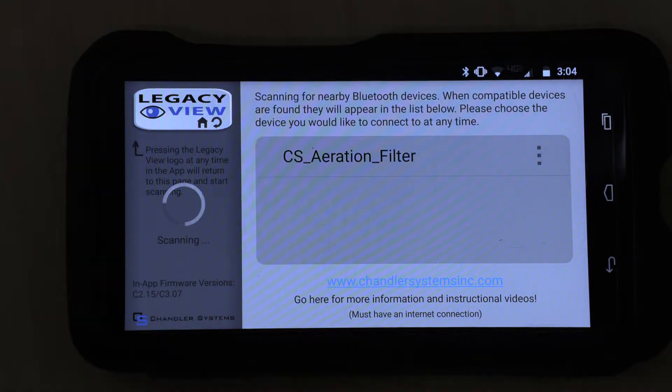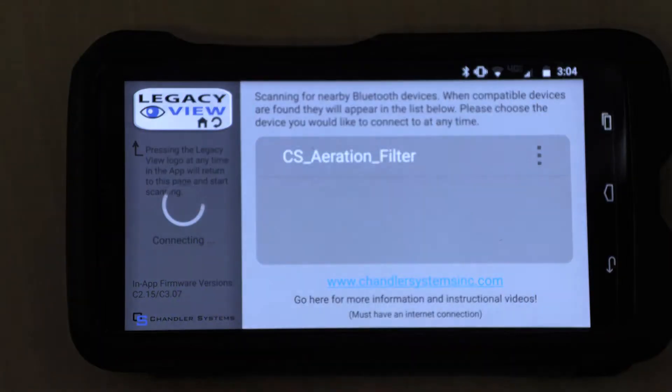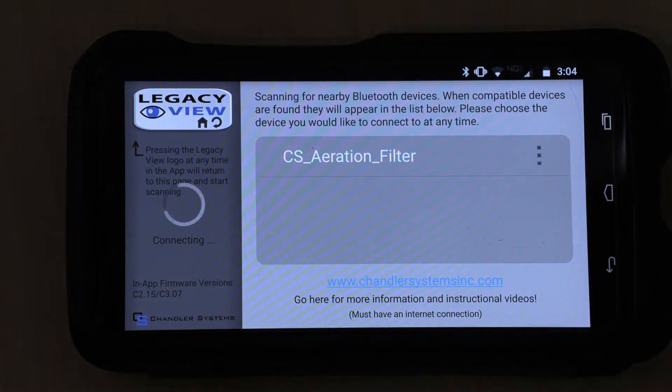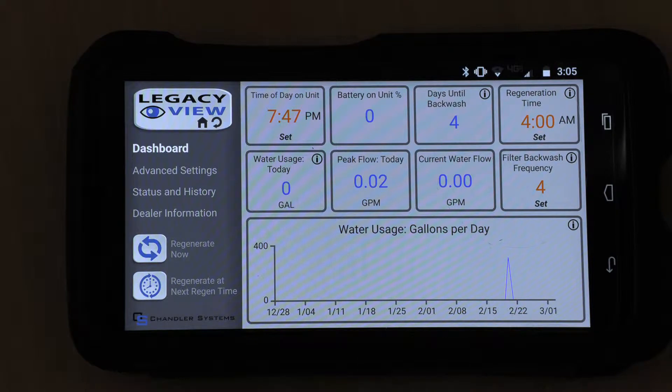Basically, you can download this app and it's Bluetooth. It'll locate your filter. If you have several filters, it'll list them, but in this case I've only got one. It comes up and shows all of our different settings.